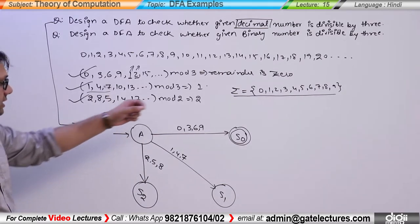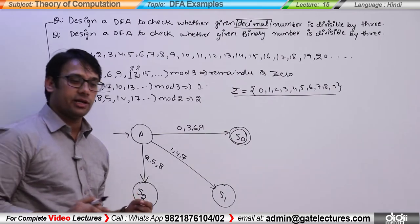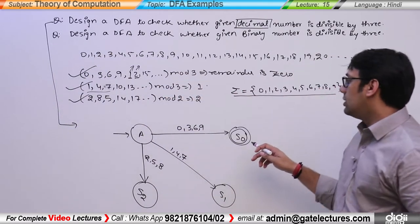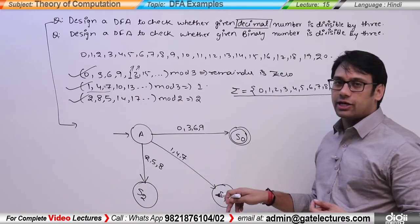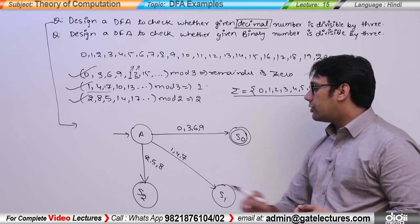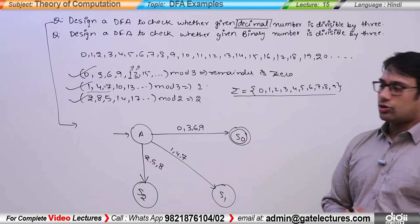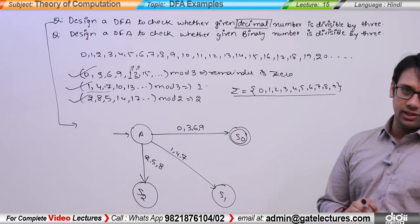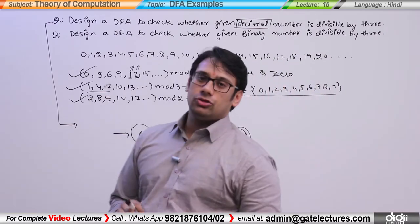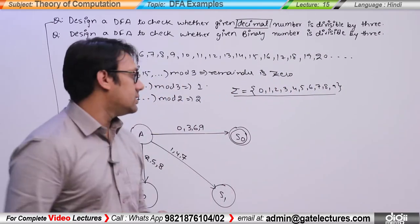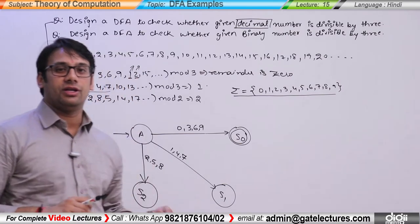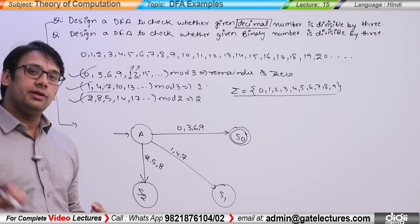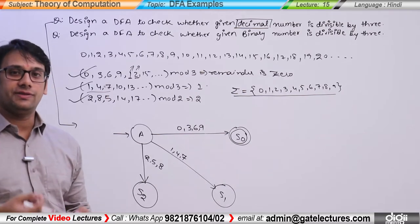So basically I have 3 states. If remainder is 0, then we go to the corresponding state. Depending on which remainder we get after dividing by 3, we transition to the appropriate state.